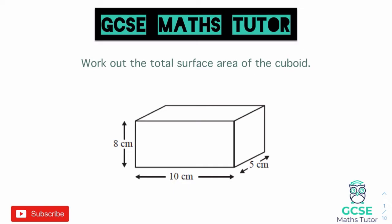This is our first question: work out the total surface area of the cuboid. When working out the surface area of a cuboid we need to work out the area of each individual surface. We can see the face on the front, and the same face that's on the front — labeled number one — is also on the back, so we have two of those rectangles for those two surfaces.